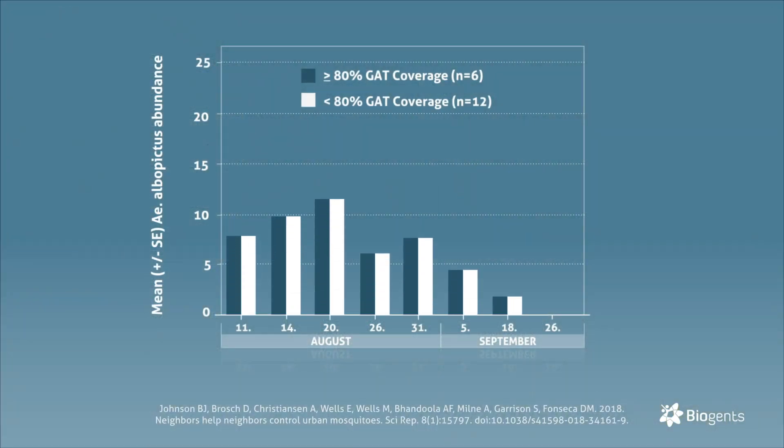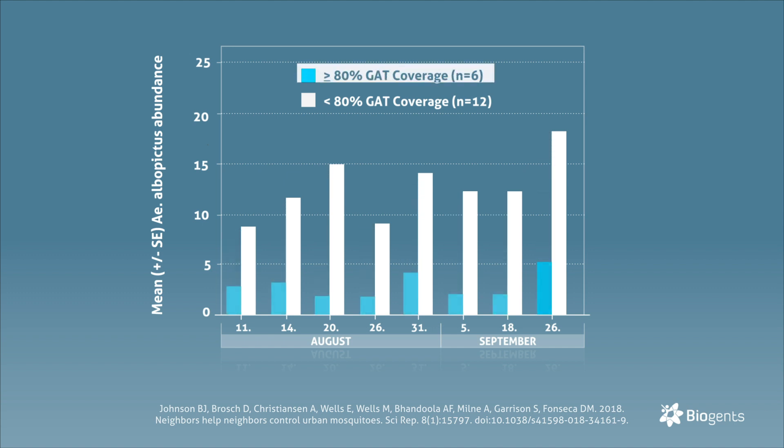A citizen science project in Maryland, USA, indicates effective reduction of mosquitoes with the BG Gat traps.